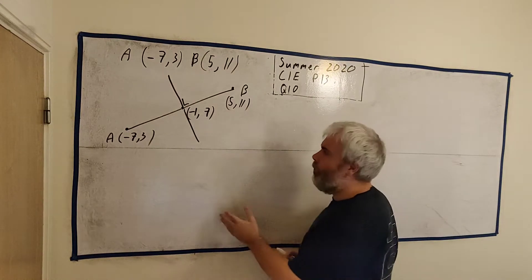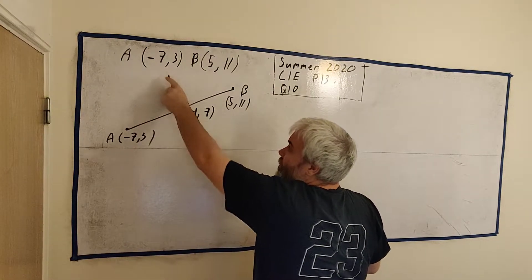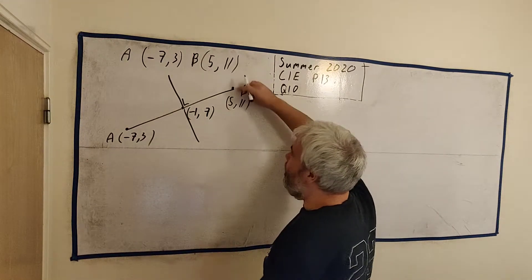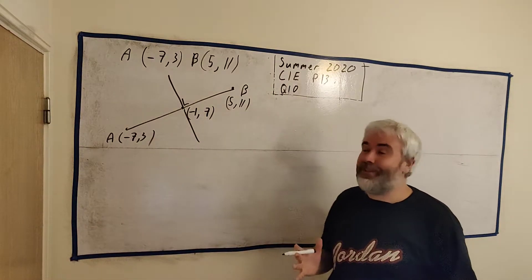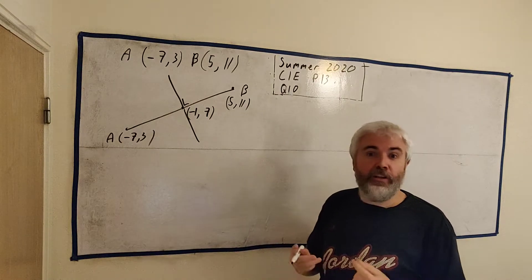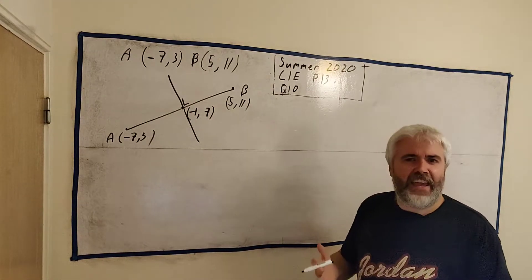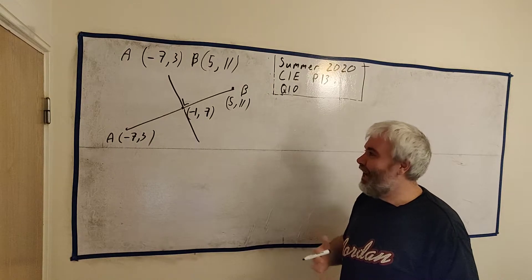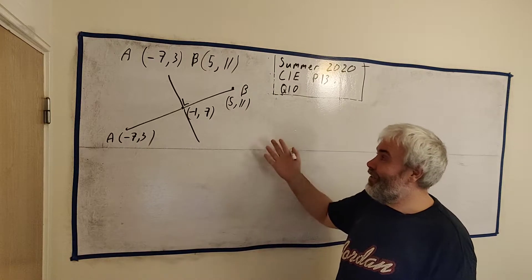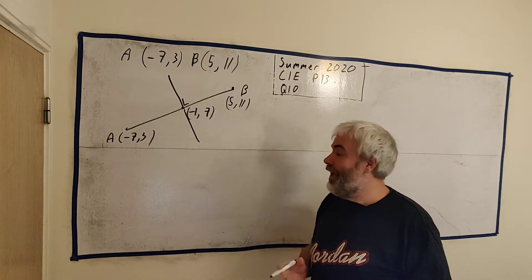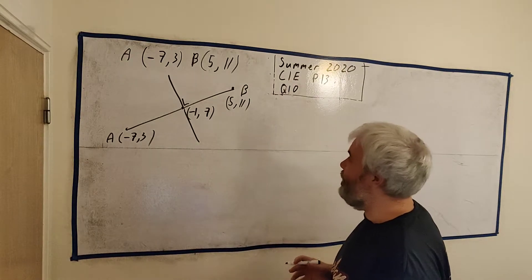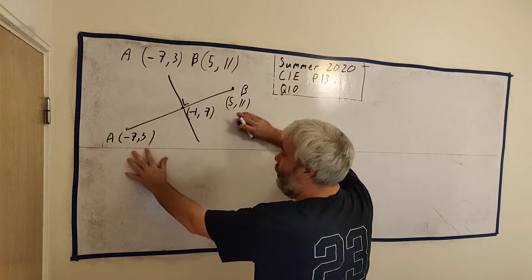Next thing we need to find the equation of a line is a slope. To get that slope, we find the slope of this line. Because as most students tend to remember, to get the slope of a perpendicular, we turn it upside down and change the sign. It comes from the fact that two slopes multiplied will give you minus 1 if they're perpendicular.